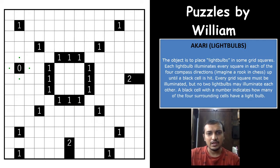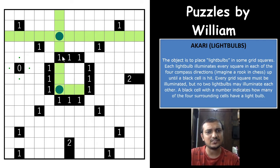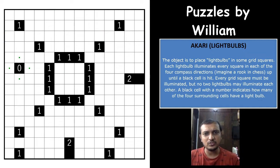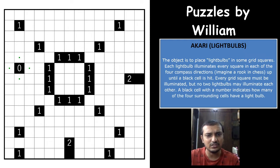All the white cells in the grid must be illuminated by a light bulb. The numbers in the grid indicate the number of light bulbs placed in the four orthogonal cells adjacent to that black cell. One important rule: light bulbs cannot see each other directly — two light bulbs cannot be in the same row or column without a black cell between them. A black cell with a number indicates how many of the four surrounding cells may have a light bulb.